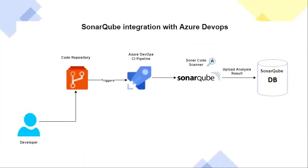This is the technical architecture diagram for SonarCube integration with Azure DevOps. In this architecture diagram, we describe the Azure DevOps Pipeline features to help our application code get built with Azure DevOps Pipeline. The SonarCube scanner analyzes the code quality and uploads analysis results to the SonarCube database.